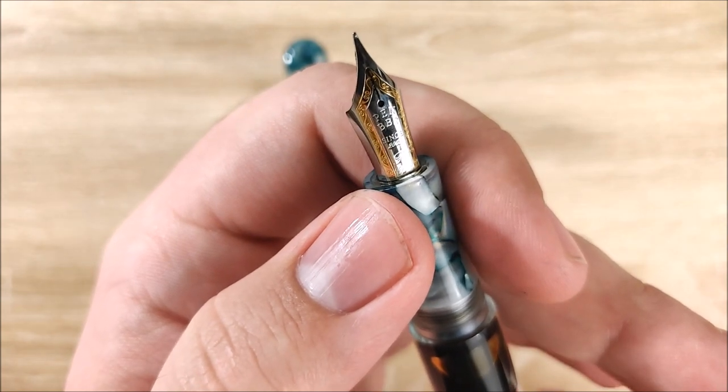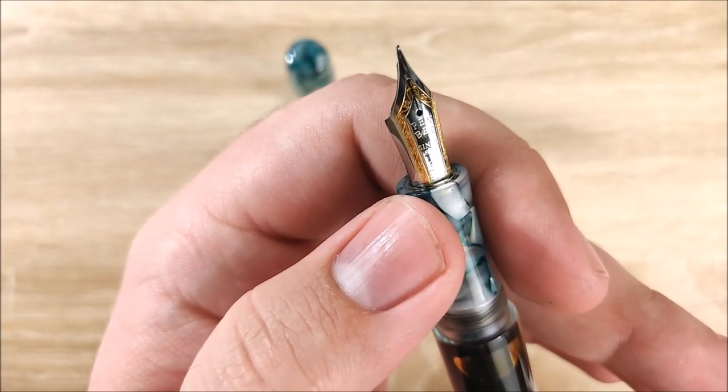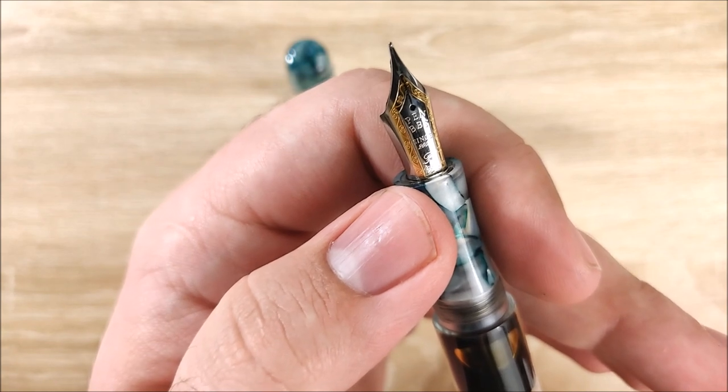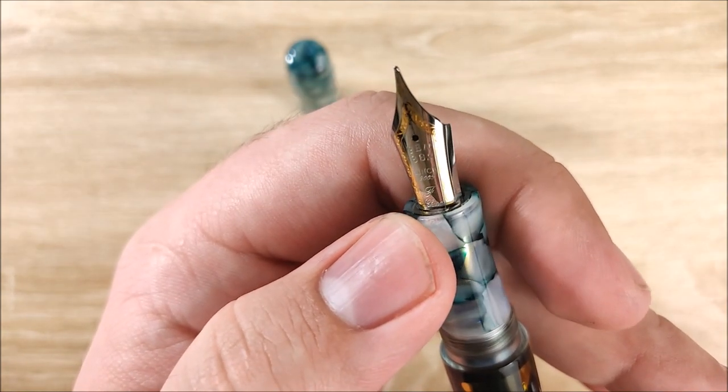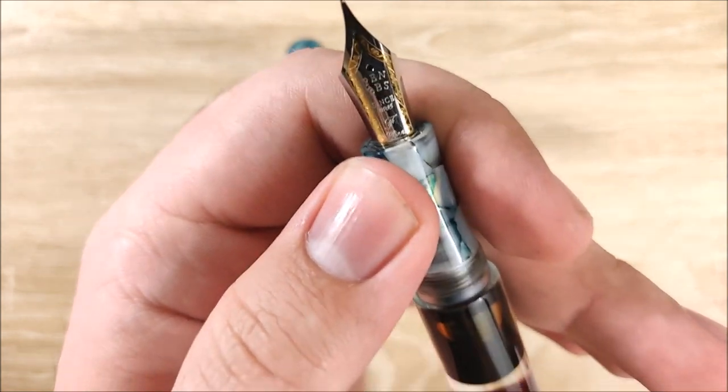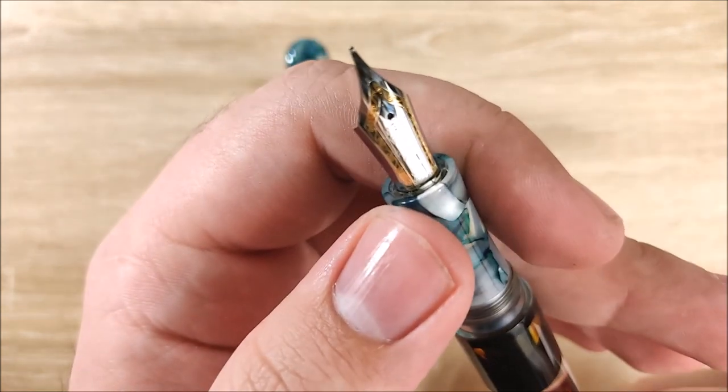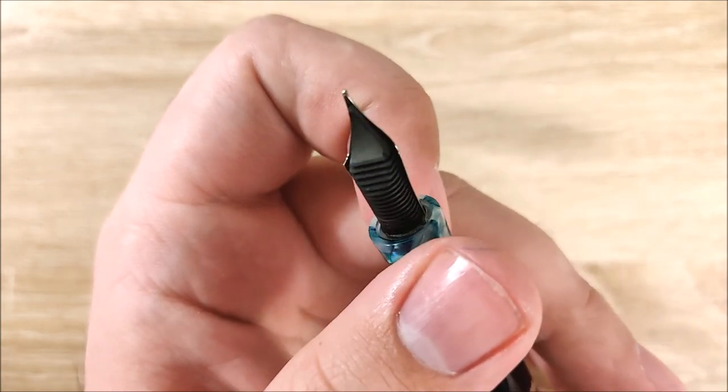Keep in mind these nibs, both of these on here are both fine. I would probably go with maybe a medium or a broad and a stub. I think that would be interesting. But yeah, they do both come with, or both ends are fine nibs. One's two tone, one's silver. And the nibs write pretty smooth, honestly, for a fine.